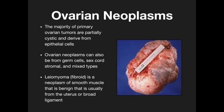The first neoplasm we're going to talk about is ovarian neoplasm. The majority of ovarian tumors are partially cystic and derived from epithelial cells. Ovarian neoplasms can also be from germ cells, sex cord, stromal, or mixed types.